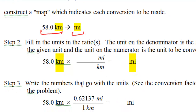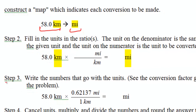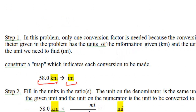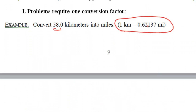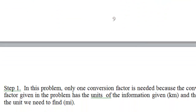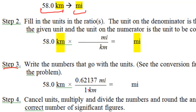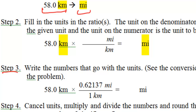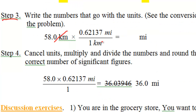Step 3 is plugging in the numbers from the conversion statement. The conversion statement tells us that 1 kilometer equals 0.62137 miles, so we place 1 beside kilometer and 0.62137 beside miles. Step 4 is the calculation: kilometers cancel out and you are left with 58 times 0.62137 miles.